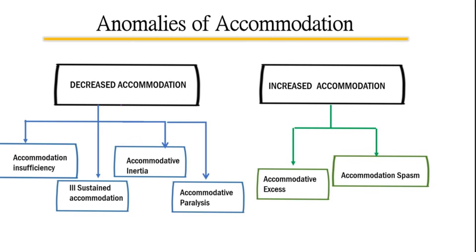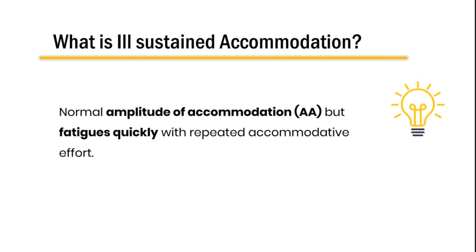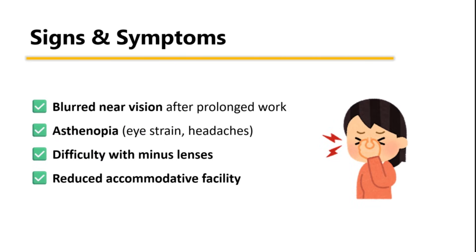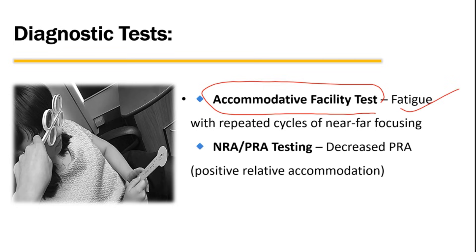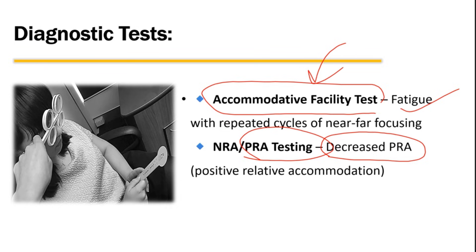Now let's talk about ill-sustained accommodation. Here, the amplitude of accommodation is normal, but it will fatigue quickly with repeated accommodative effort. These patients will have blurred near vision after prolonged work, asthenopia, difficulty with minus lenses, and reduced accommodative facility. In the accommodative facility test, they experience fatigue with repeated cycles of near-far focusing and have decreased PRA, having problems with minus lenses because they cannot hold accommodation for long.